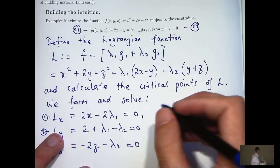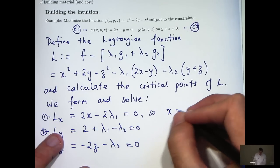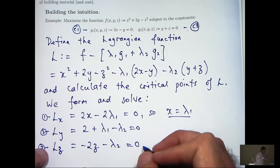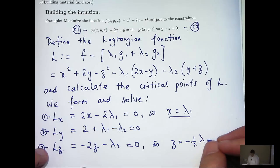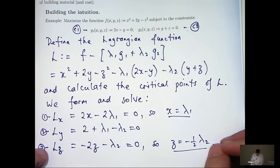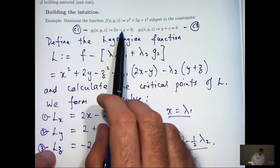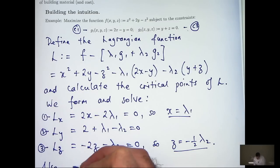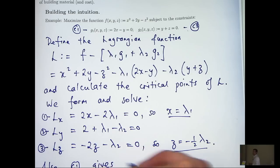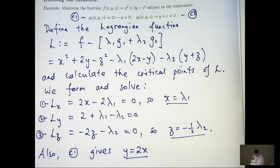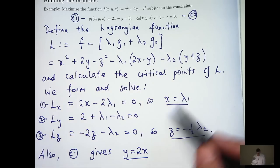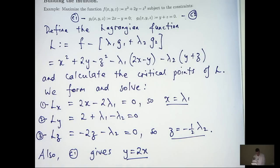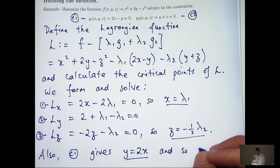So I can rearrange first to get x equals lambda 1 up here. And I can rearrange down here to get z equals minus 1 half lambda 2. Now I can rearrange c1 to get y equals 2x. So what I'm trying to do now is just simplify everything and see if I can come up with x, y and z, lambda 1 and lambda 2. Well, if I look at these two, I can immediately form a relationship between y and lambda 1.